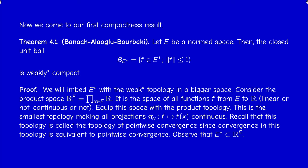E* is a subset of this bigger space R^E. Now we have four topologies on E*: the norm topology, the weak topology, the weak star topology that we defined earlier, and now a fourth topology — the subspace topology. Any subset of a topological space inherits a topology called the subspace topology. Our first target is to prove that the weak star topology and the subspace topology coincide.